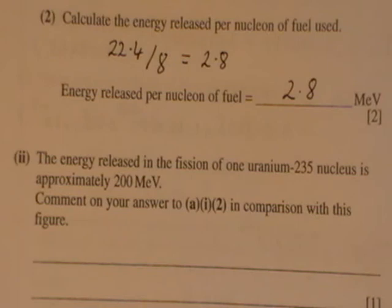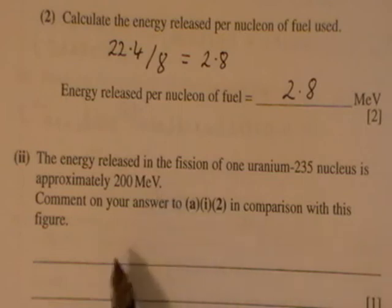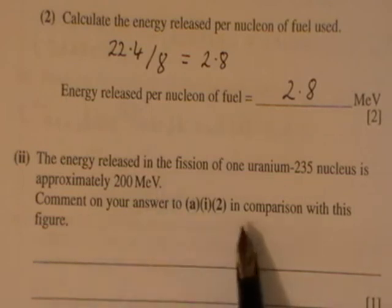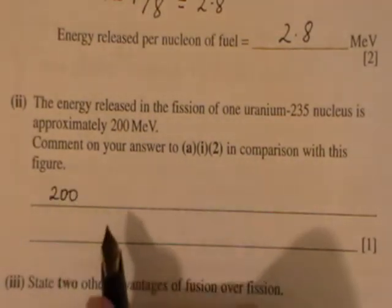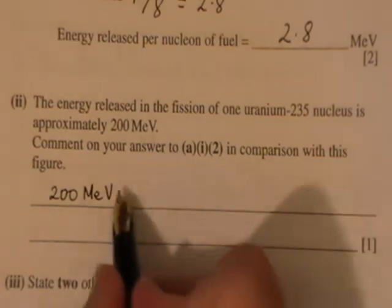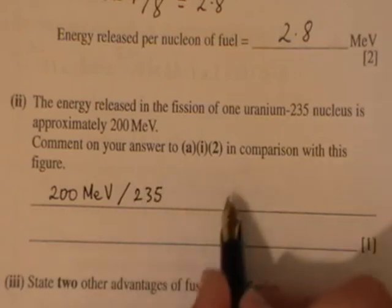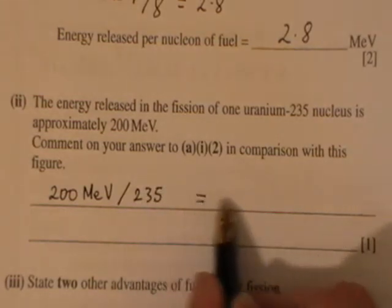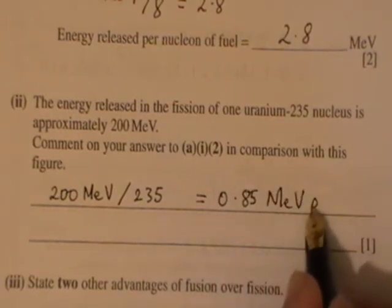The energy released in the fission of one uranium-235 nucleus is approximately 200 MeV. Comment on your answer to part A in comparison with this figure. Well, in order to compare like with like, we have to convert the 200 mega electron volts per nucleon. So, it's 200 mega electron volts divided by 235, which gives us 0.85 mega electron volts per nucleon.